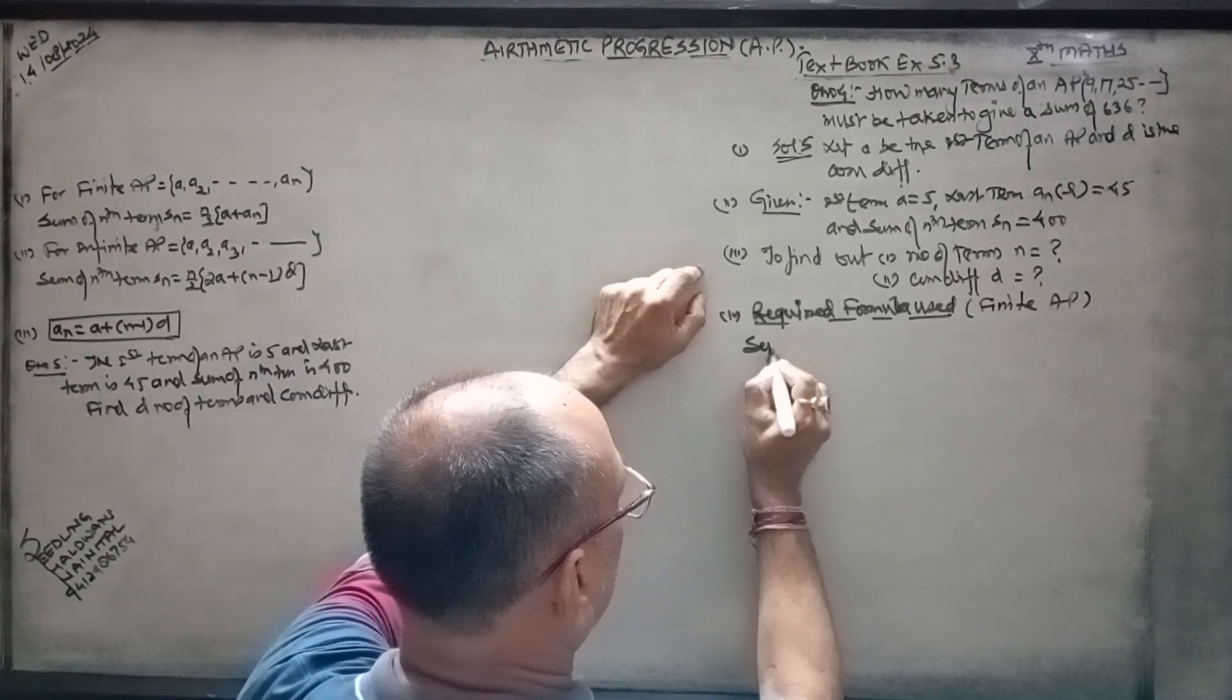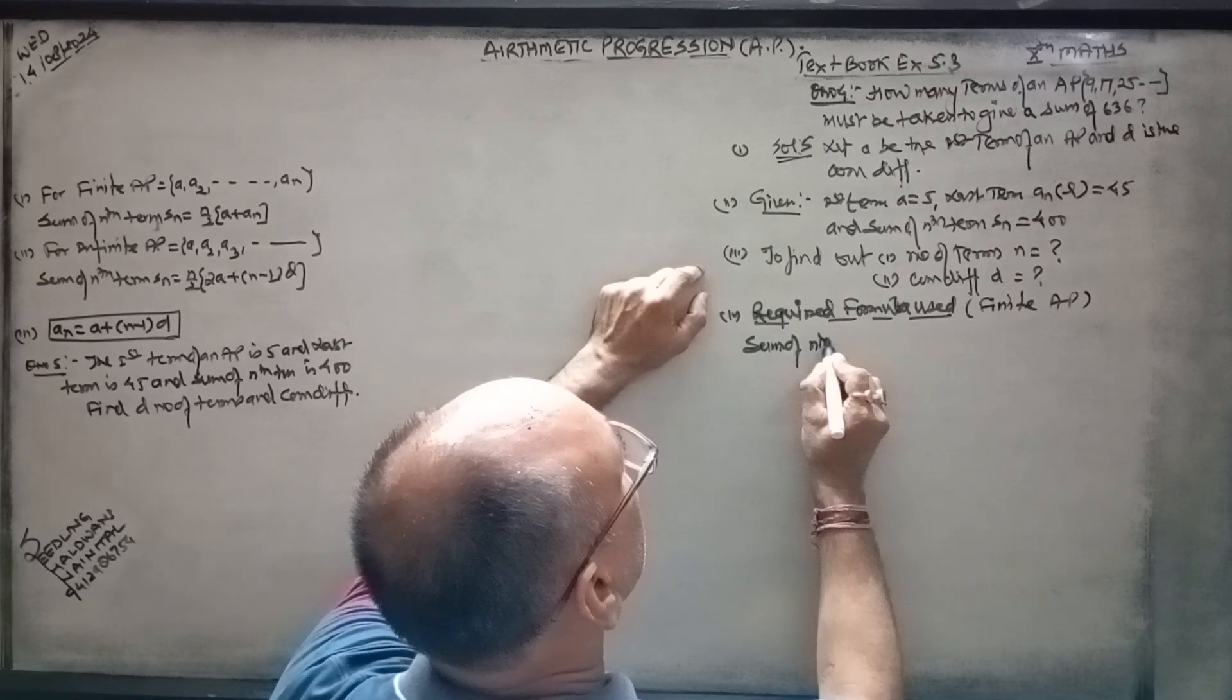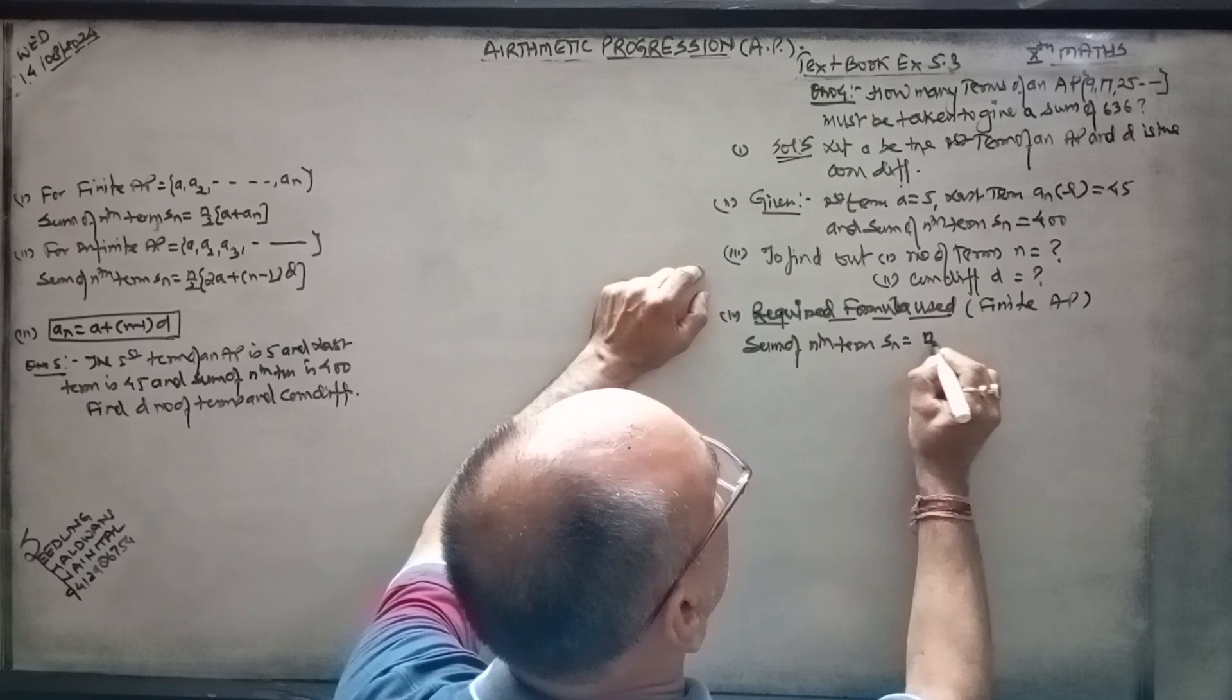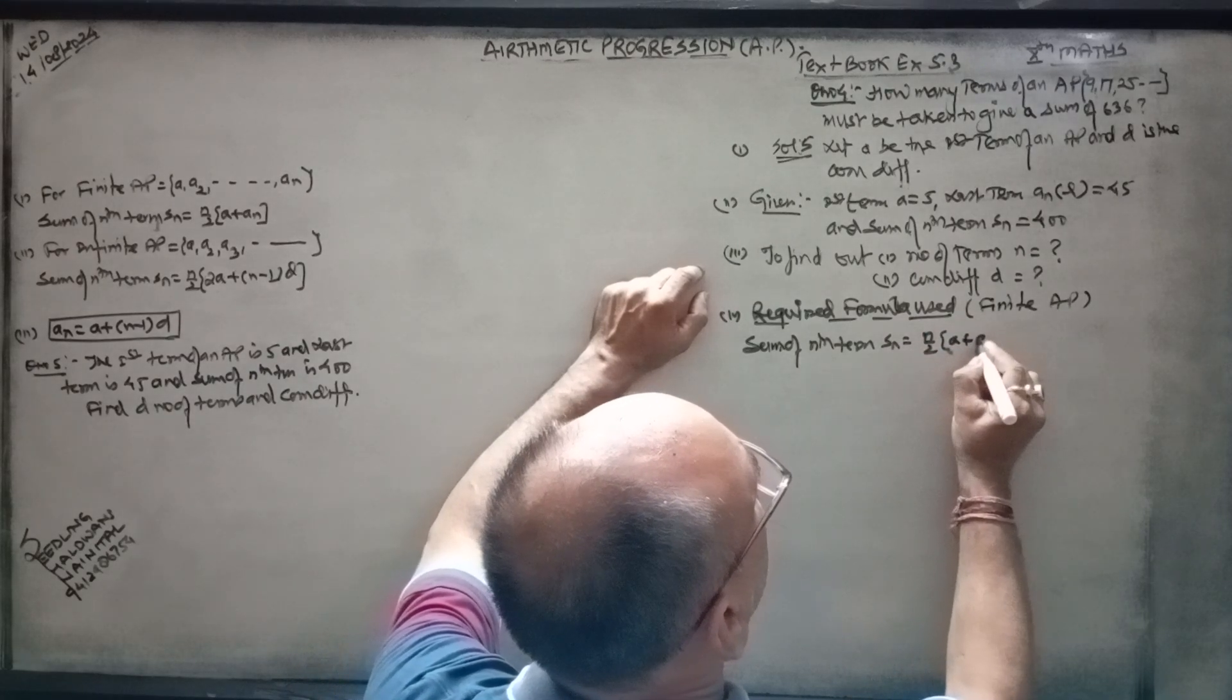Sum of n terms: Sn equals n by 2 times (a plus An or L).